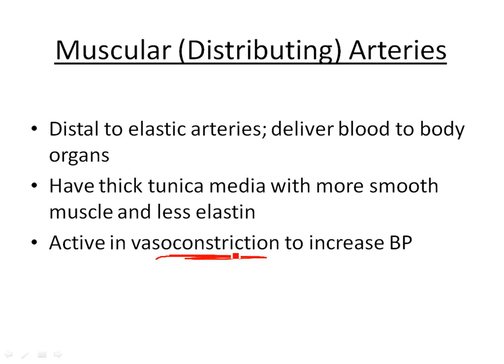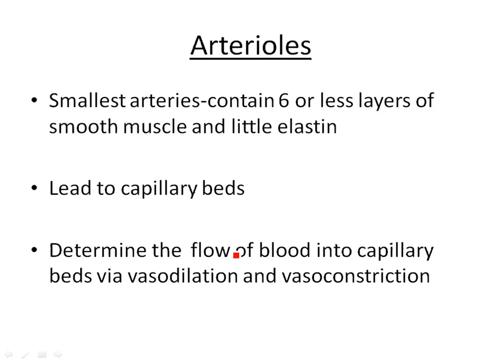As you keep moving away from the heart, you get down to the smaller arterial vessels known as arterioles — the smallest of the arterial system. They contain six or fewer layers of smooth muscle and very little elastin, sometimes none. These are the ones that lead into the capillary beds and are really important in determining how much flow actually goes to the tissues. The vasoconstriction and vasodilation in these arterioles is controlled by hormones, the sympathetic nervous system, and local chemicals.